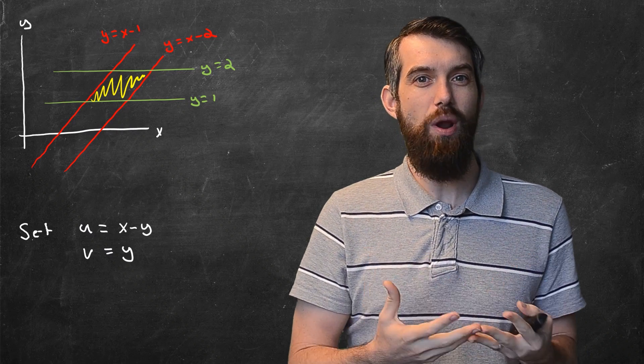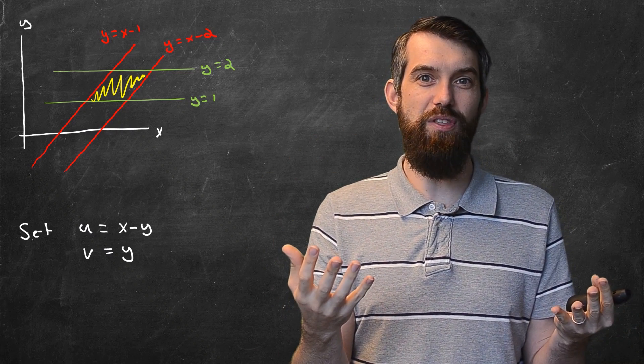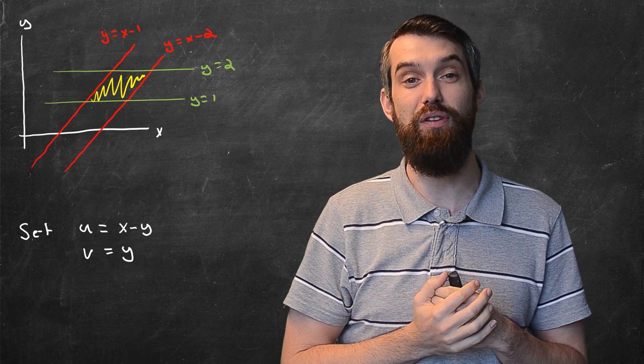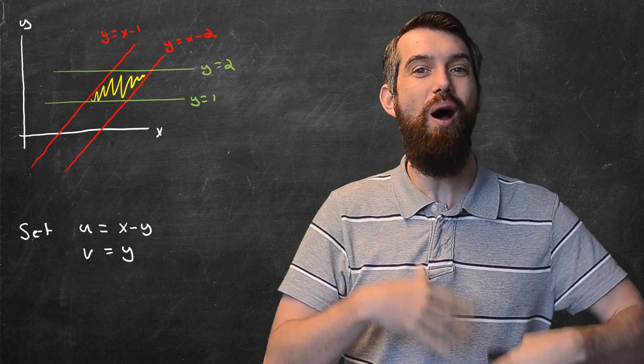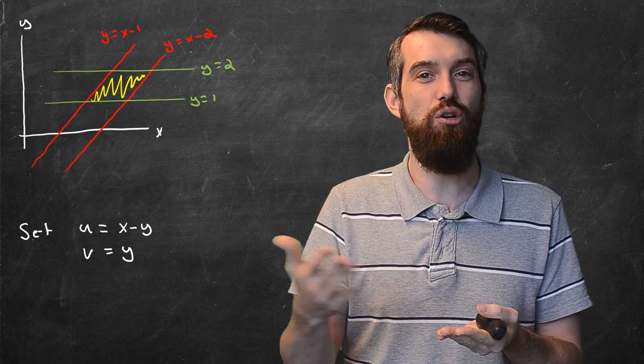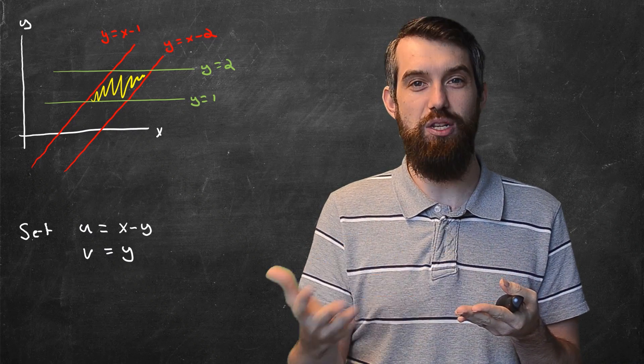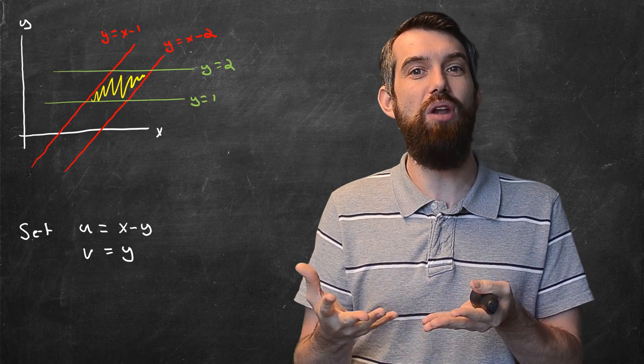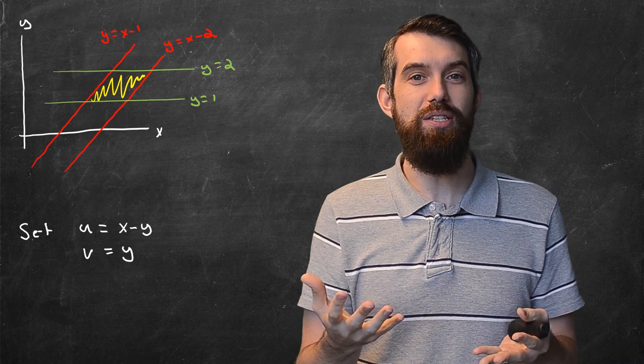So what if I do a change of variables? That is, what if I introduce new variables, u and v, where v is just going to be equal to the y values. But for the two diagonal lines that are not easily expressed by x equal to a fixed value, if I set u equal to x minus y, then one line is just u equal to 1 and the other line is u equal to 2. These are just constants.